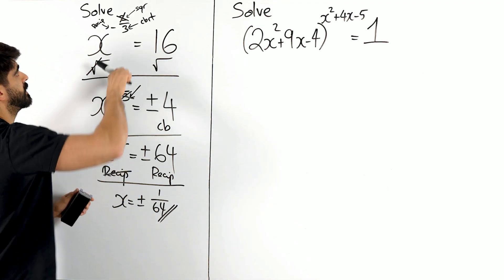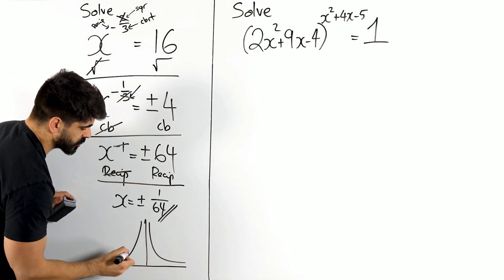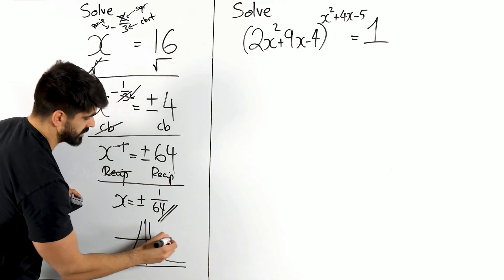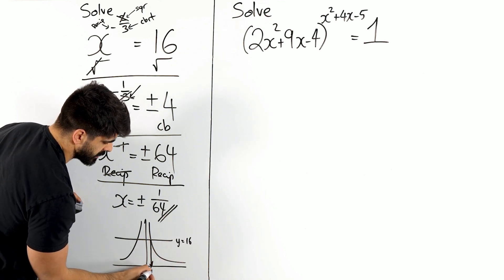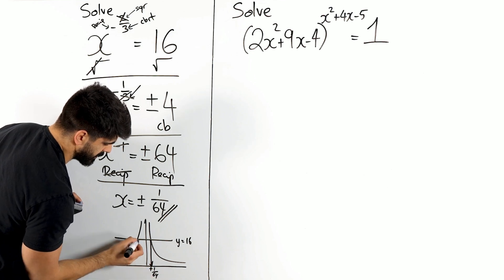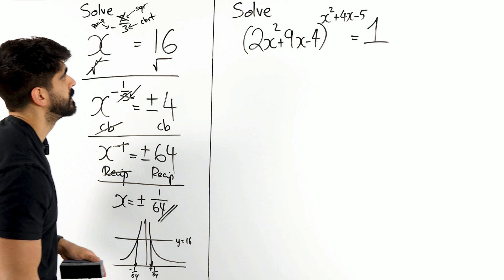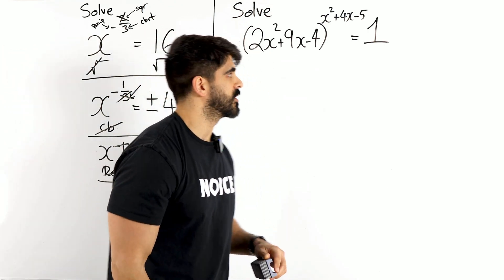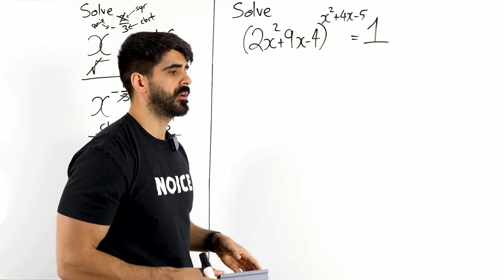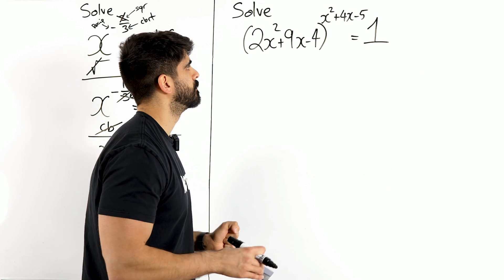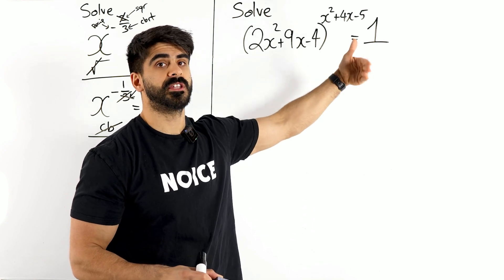Now you don't need to know what it looks like, but this x to the minus two thirds, it looks like this. What we've just shown is that when y is 16, just like a quadratic, you have two solutions. This one is plus one over 64 and this one here is minus one over 64. That's what we have just shown. How do we get to this tricky question? Something to the power of something is one. So we're thinking about our index rules and the number one. What index rules involves powers and ending up with the number one?